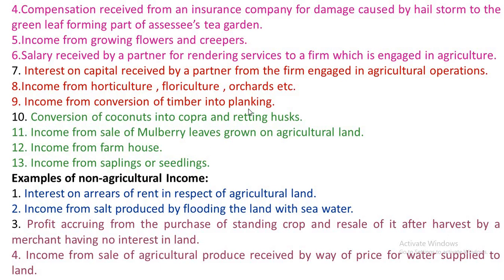Number 8 — Income from horticulture, floriculture, orchards, etc., shall be treated as agricultural income. Number 9 — Income from conversion of timber into planking: Any income derived from conversion of timber into planking shall be treated as agricultural income.